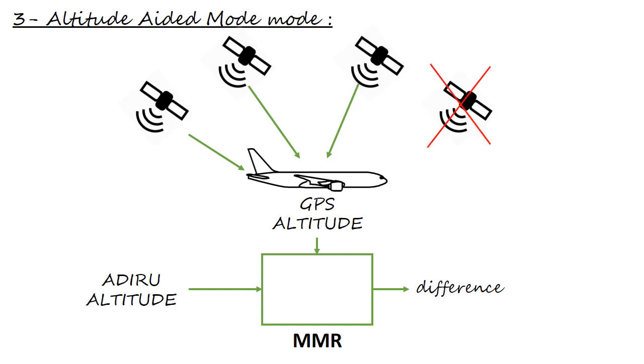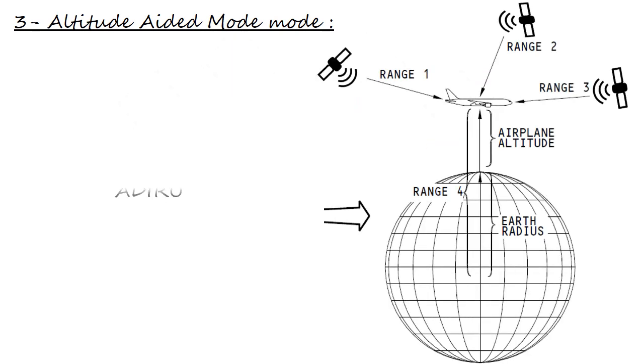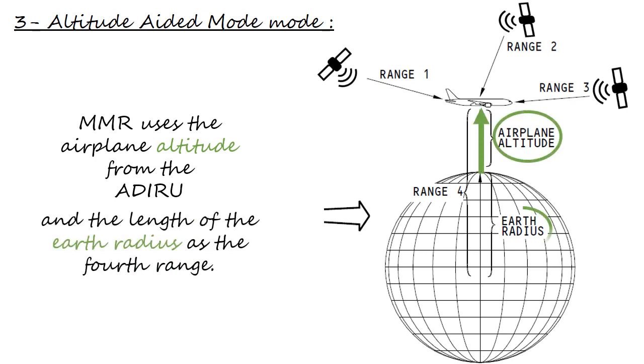In the altitude-aided mode, the MMR uses the airplane altitude from the AIMS and the length of the earth radius as the fourth range.